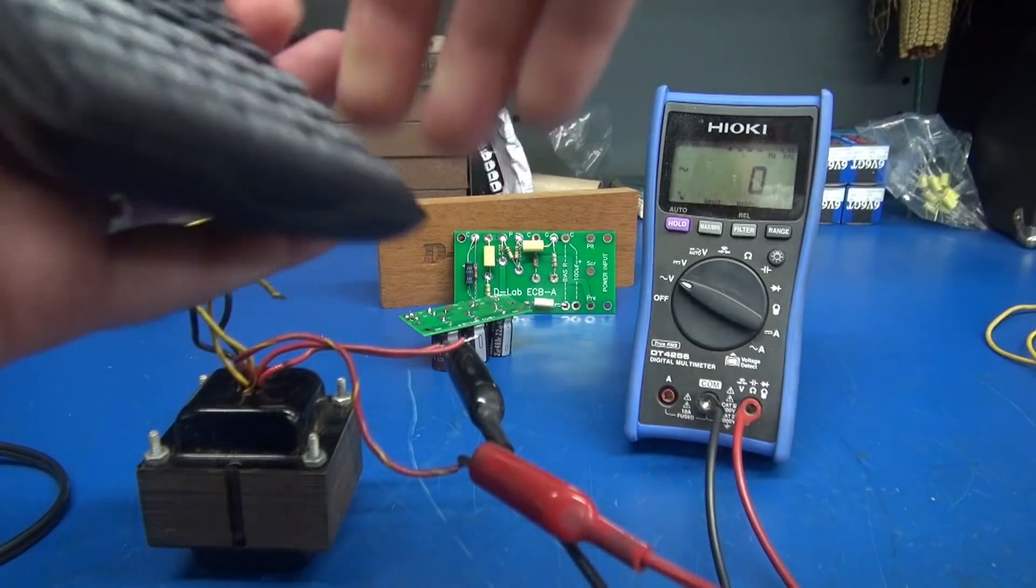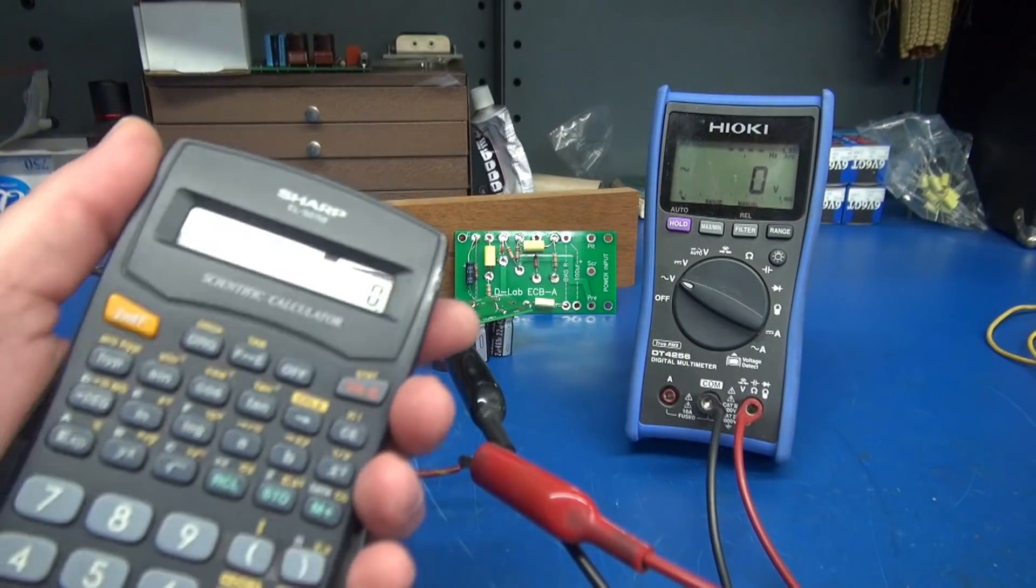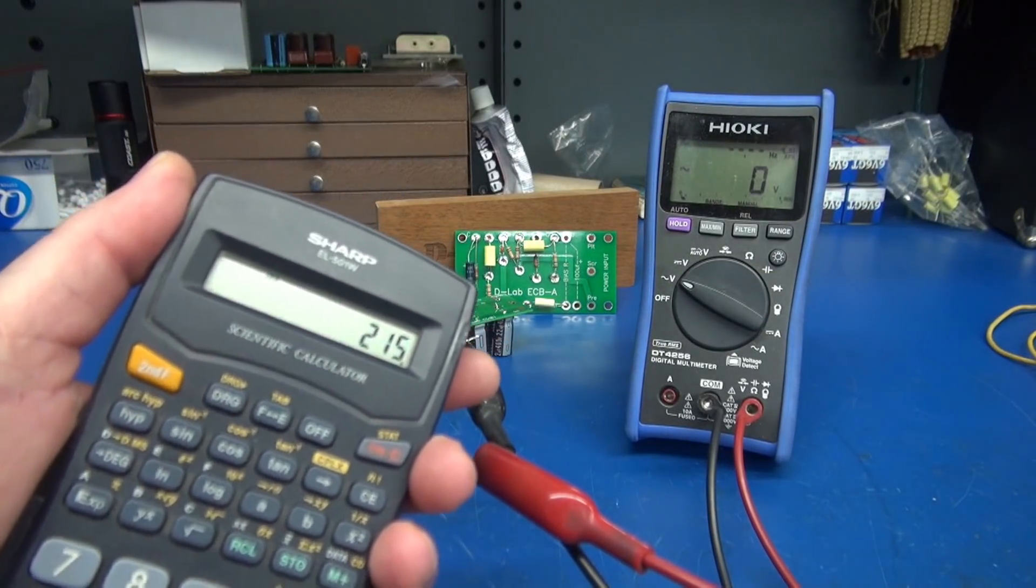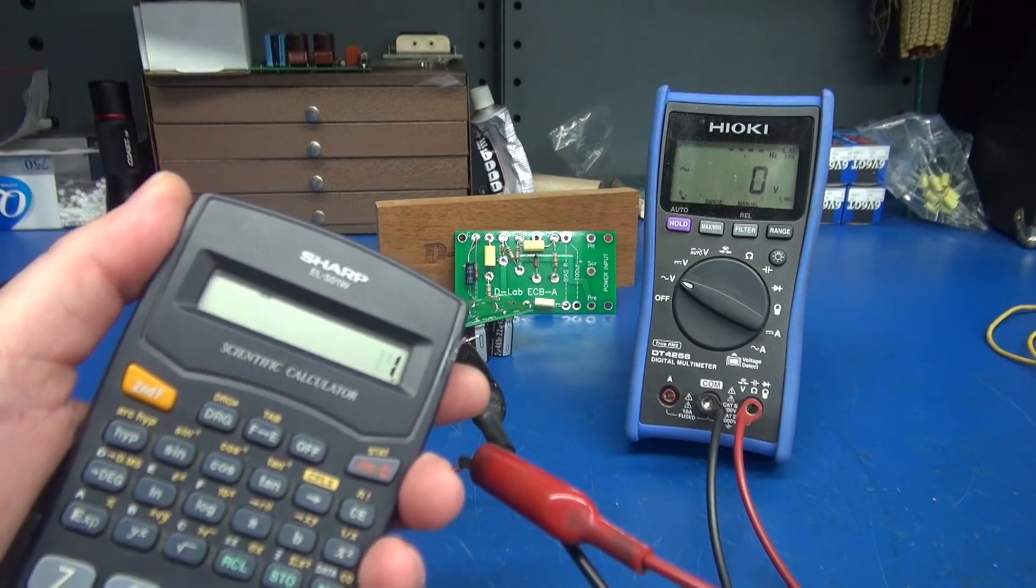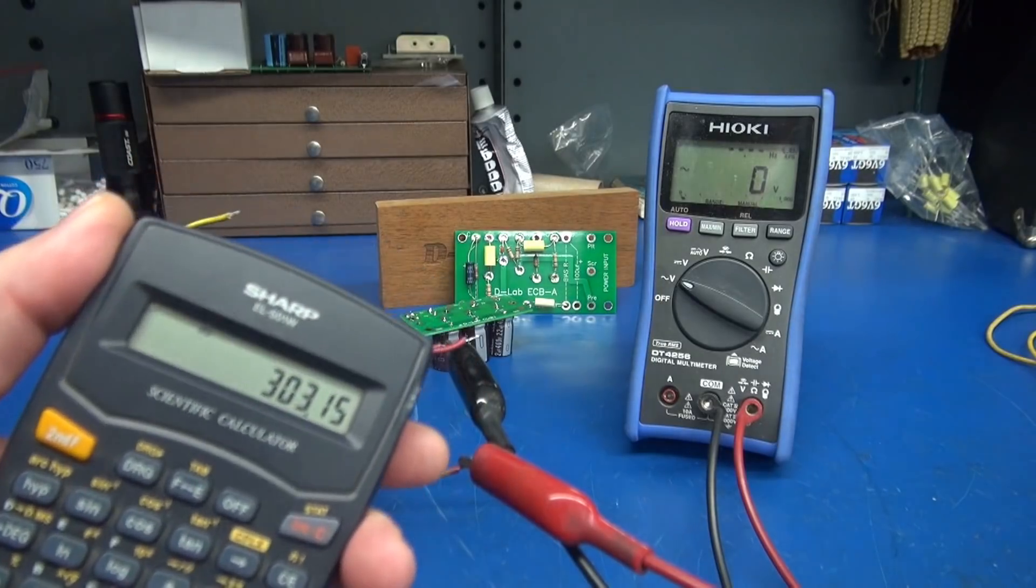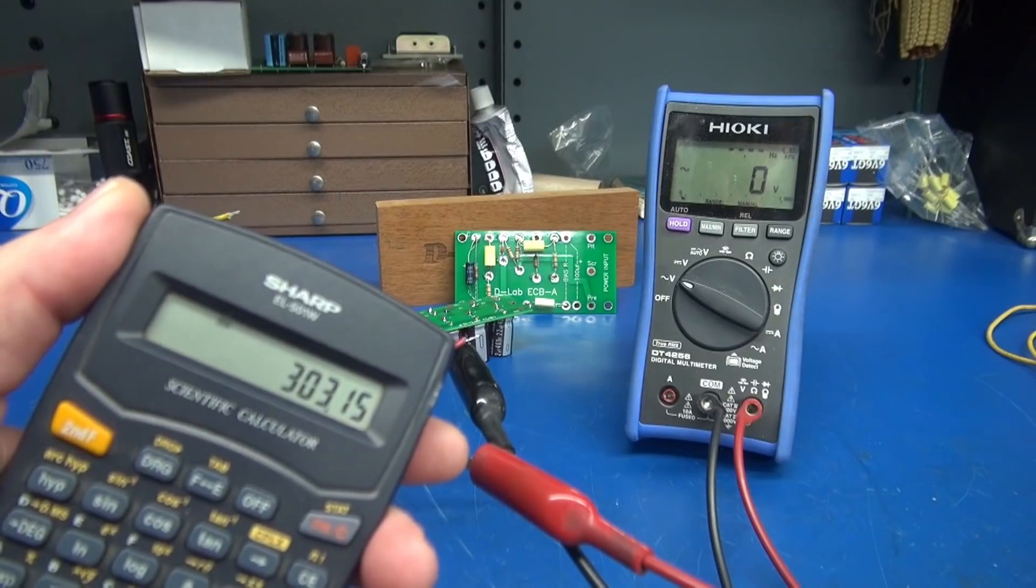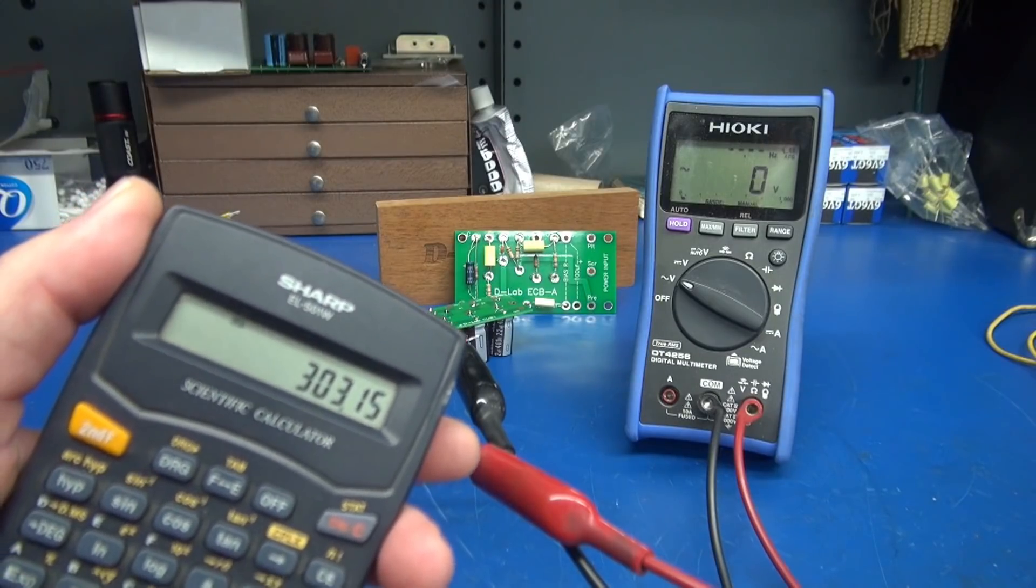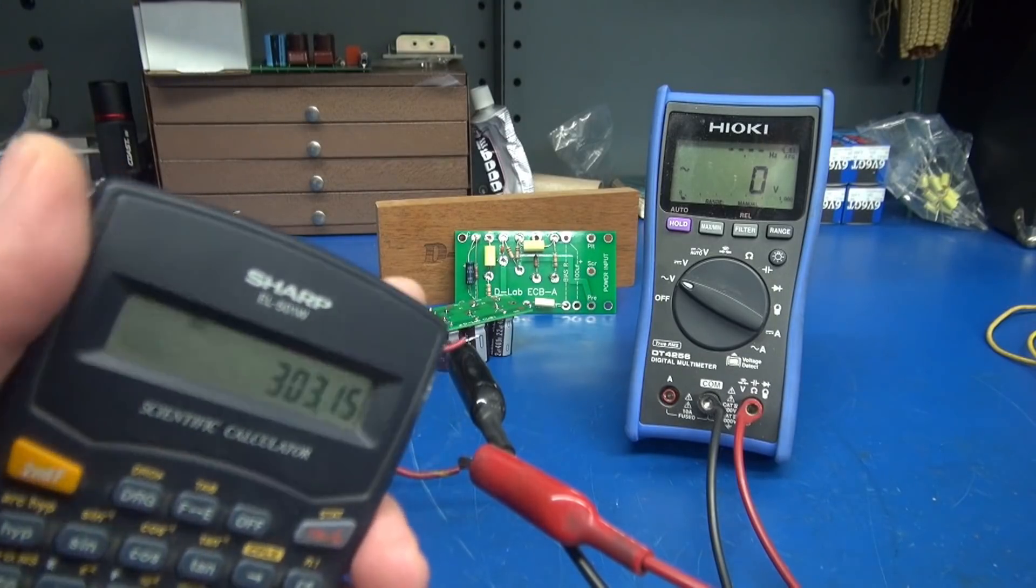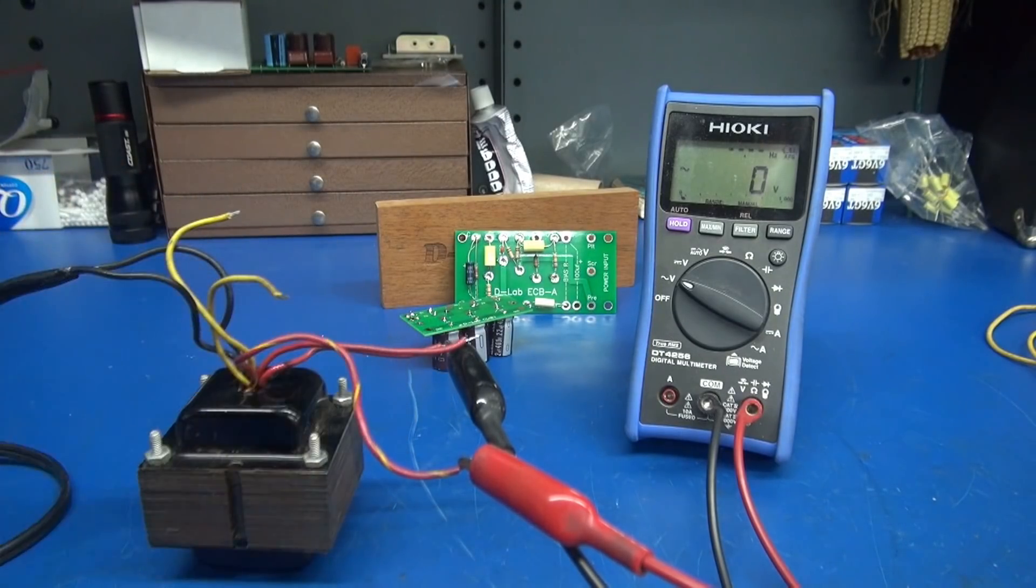So if you look at your magic formula, you say 215 times 1.41, they're saying that is approximately 300 volts after it's rectified DC. However, that's not really the case. That would be unloaded DC.